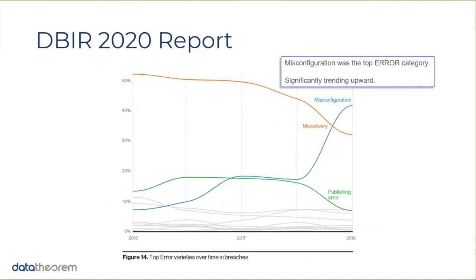This is the first year misconfiguration has overtaken the number one position of why people are being data breached. Our view at Data Theorem is that developers have so much power in the current way applications are constructed — whether it's a single page application or a mobile application. The ability to spin up massive global infrastructure with just a few lines of code calling API services and spinning out tons of serverless infrastructure means that if you don't have a security mindset as you're building, a simple error can occur. It's not always the developer's fault; there are so many places a misconfiguration could occur, particularly when pushing out new features daily or weekly. Look at the difference between 2018 and 2019 on how much this has become a problem.